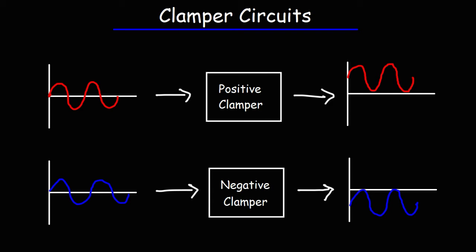In this video we're going to focus on clamper circuits. Clamper circuits are designed to shift a time-dependent voltage variant signal. A positive clamper will shift the signal up above a reference voltage, and a negative clamper will shift the signal below the reference voltage.